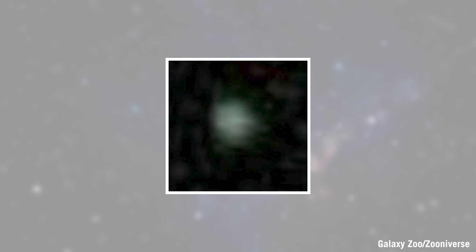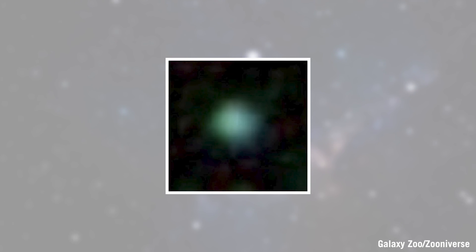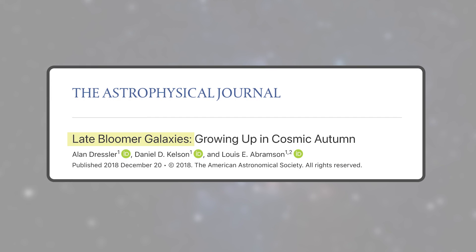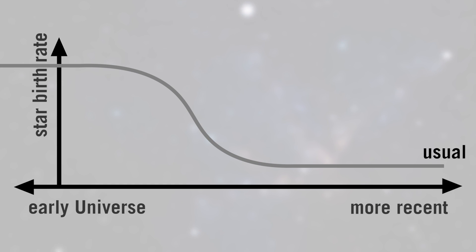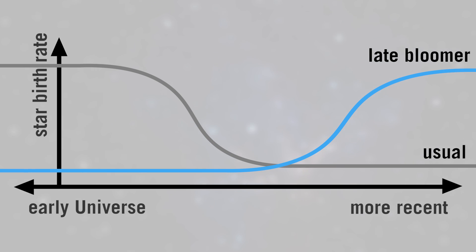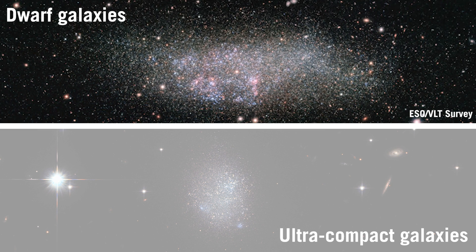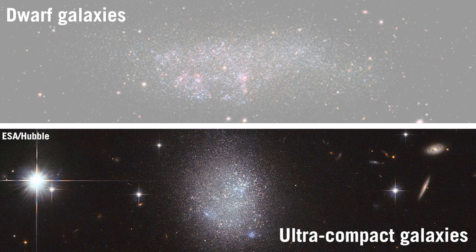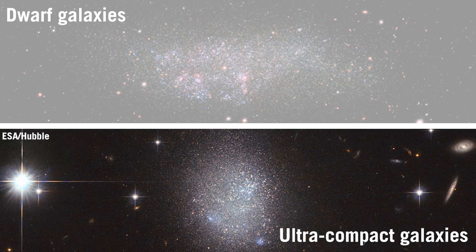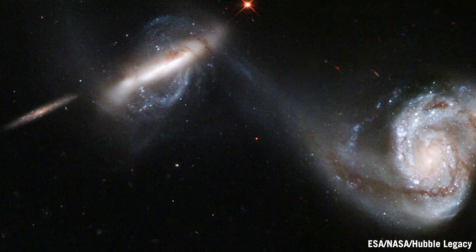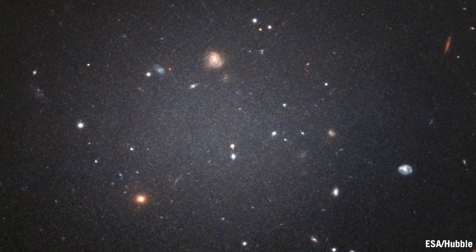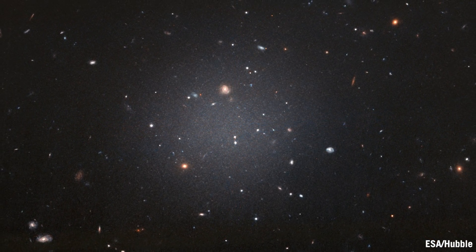There are also Green Peas, a very different population from Green Valley galaxies. Green Peas are compact galaxies with extreme star formation rates, and they were actually discovered in a citizen science project called Galaxy Zoo, where people looking at galaxies found these really interesting-looking objects. Late Bloomers are recently discovered galaxies that don't follow the usual trend and in fact started forming a lot of stars in very recent times. There are dwarf galaxies — really wispy galaxies — which are different from ultra-compact galaxies, which are extremely concentrated point source-like galaxies found around larger systems like galaxy clusters. There are also mergers and interactions between galaxies that sometimes cause very weird shapes, and ultra-diffuse galaxies that are sometimes so faint we can't even see them with conventional telescopes.